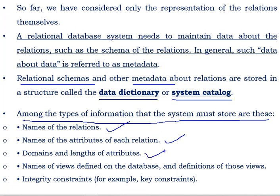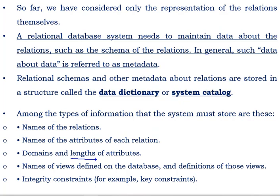Next is the domain and length of each attribute. Domain is nothing but the type of attribute. For example, roll number is a numeric or integer type; name may be a varchar domain. We also specify some length to every domain, so that length should also be part of metadata. Next is the name of views defined by the database and definitions of those views. If we have created some views, they can also be part of metadata.